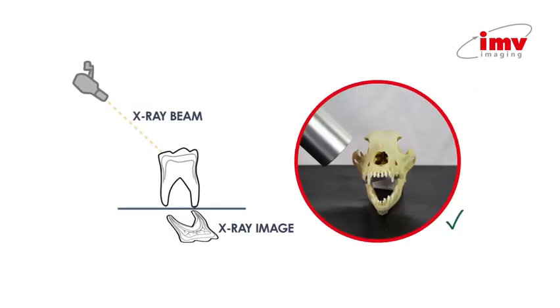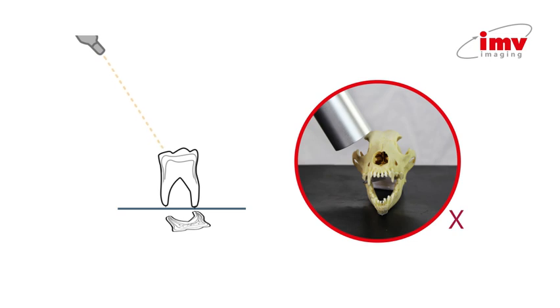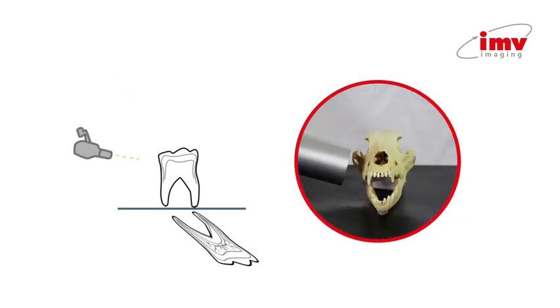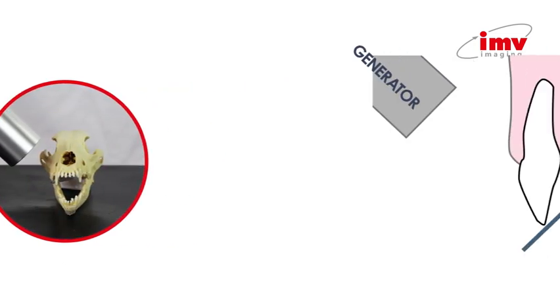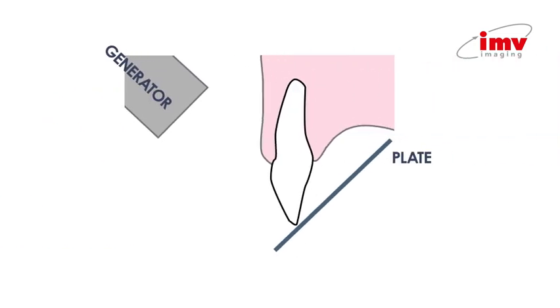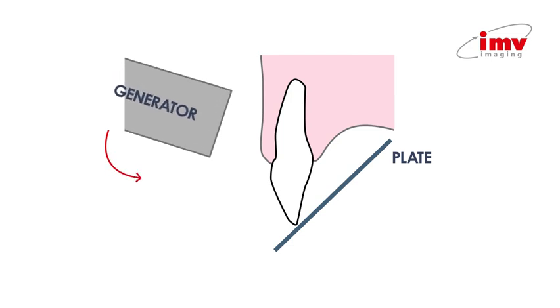Bisecting angle technique is used in dental radiography to minimize the distortion of our x-ray images in situations where we cannot place the plate parallel to the teeth. Using this technique we try to place the tube head of our generator perpendicular to an imaginary line that bisects the angle formed between the roots of the teeth we are imaging and our detector plate.